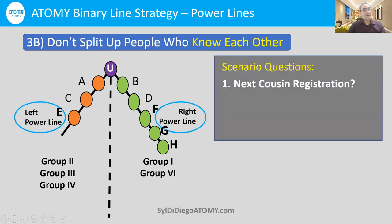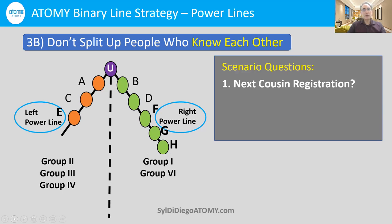Let's look at a scenario with Cousin Mary, who's about to register while you already have 10 or 20 relatives on your right side. You might think, 'Mary is so friendly, so open-minded, she knows everybody — let me break the rule and put her on the left side so I'll have more PV and get more checks quicker.' The reason this is a mistake is that it's very short-sighted.